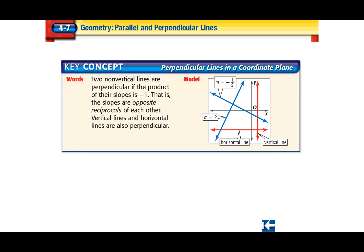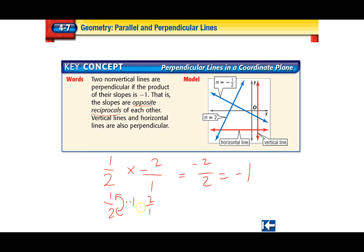Perpendicular lines in the coordinate plane: any two non-vertical lines are perpendicular if the product of their slopes is negative 1 — that is, they are opposite reciprocals of each other. So if I have one-half, I would have to multiply it by negative 2, which would be 2 over 1, giving negative 2 over 2, which equals negative 1. To get the opposite reciprocal of one-half, you flip it to 2 over 1 and multiply by negative 1.